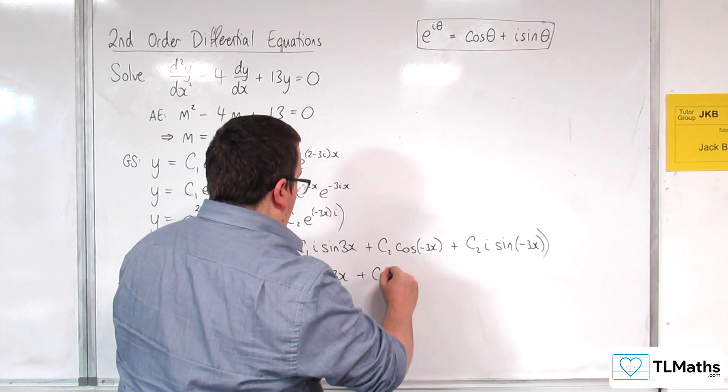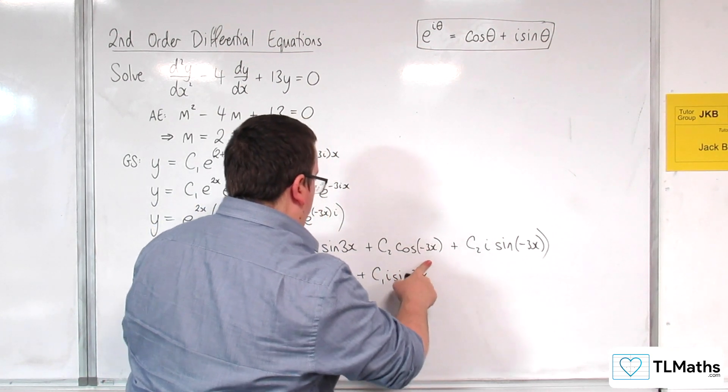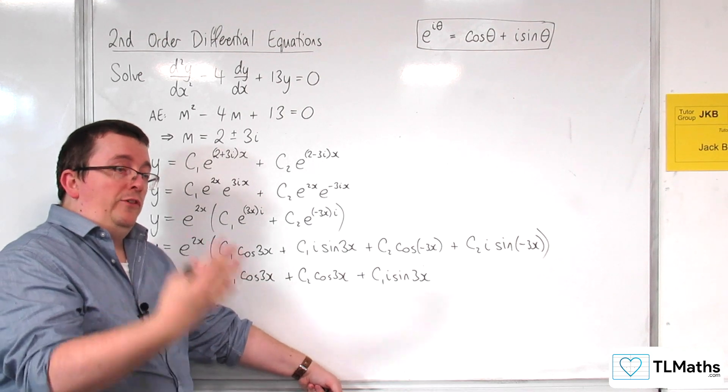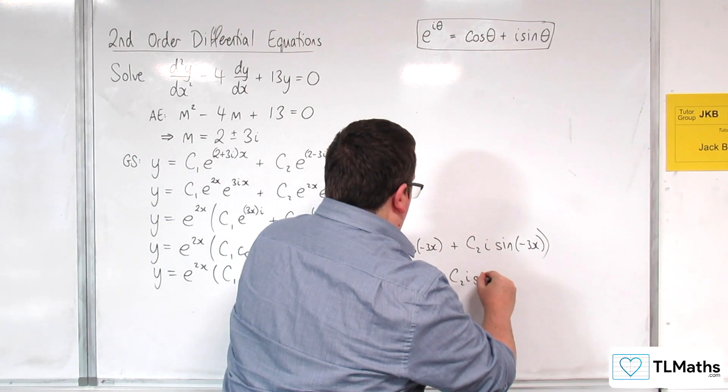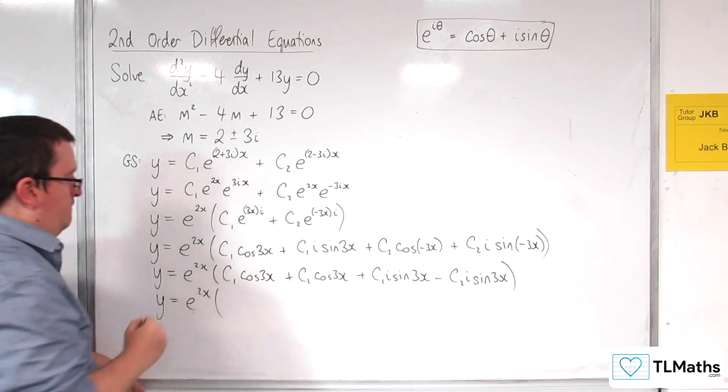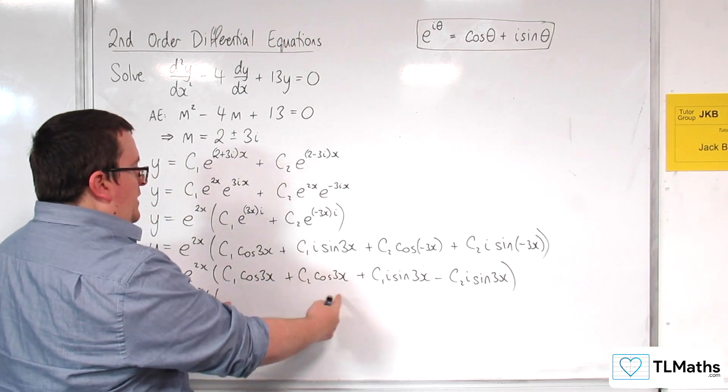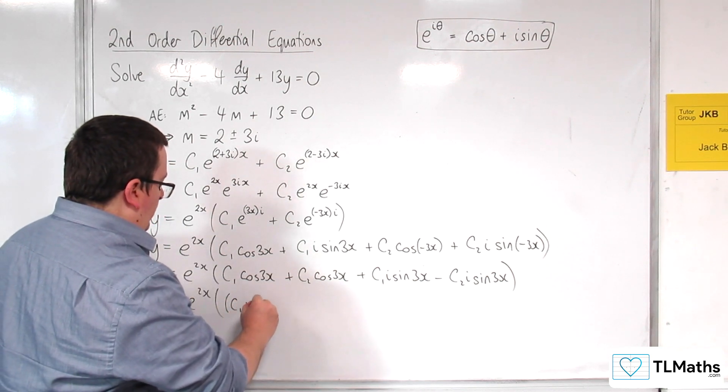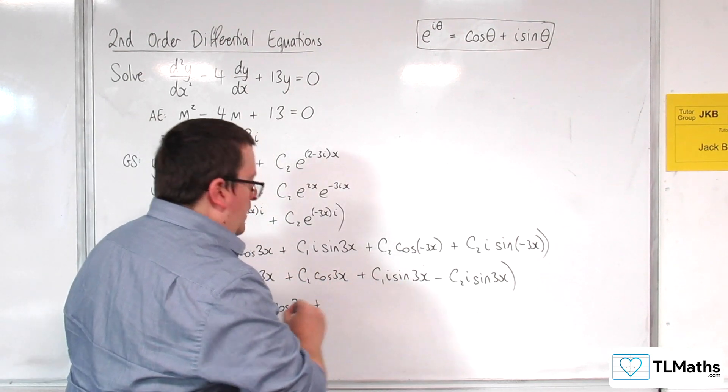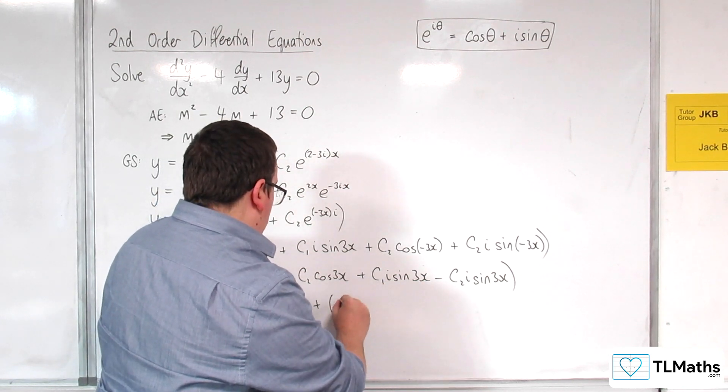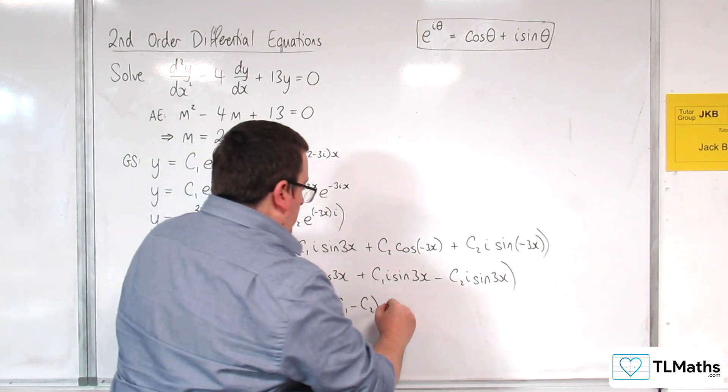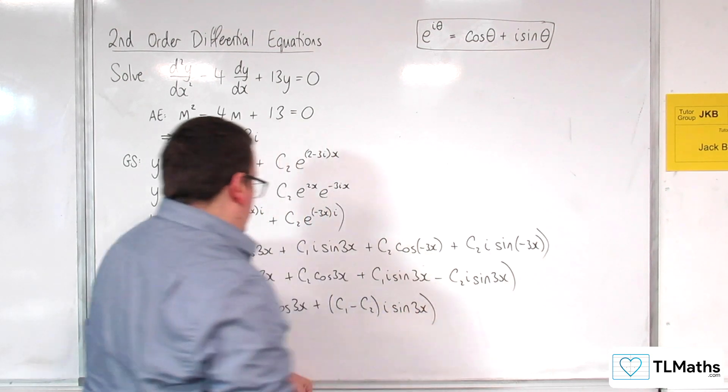We've got this term here, the c1 i sine of 3x. We're going to leave that alone for the moment. And this one, sine of minus 3x, well, that's minus sine of 3x, because sine is odd. So minus c2 i sine of 3x. So we've got this bit here, so I can factor the cosine of 3x out of those two terms and have c1 plus c2 cosine of 3x. And here, we're going to have c1 take away c2, because they've both got a factor of i sine 3x. i sine 3x. Close the bracket.